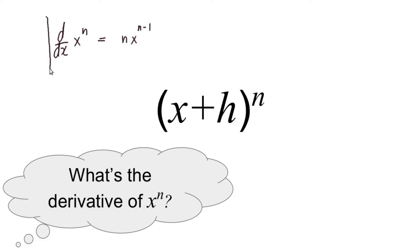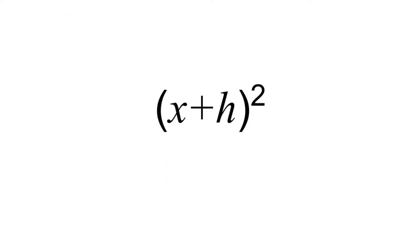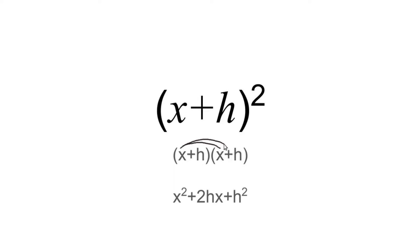We are going to prove this by the end of this video. Suppose we have the quantity x plus h squared. We know this is x plus h times x plus h, and we've already seen that that's x squared plus 2hx plus h squared. That came from x times x, plus x times h, plus h times x, plus h times h — giving us two hx terms, an x squared, and an h squared.